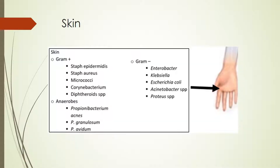Our first stop is the skin. What we're going to find most is gram-positive species, specifically Staph epidermidis, which is going to be the most common thing we isolate from the skin. Other gram-positives like Staph aureus, Micrococcus, Corynebacterium, and Diphtheroids can also be found here. Gram-negatives are mostly found in dark, damp places on the human body — between toes, in the armpits — where we can isolate things like Enterobacter, Klebsiella, E. coli, Acinetobacter, and Proteus species. Anaerobes are also found on the skin, most notably P. acnes. When thinking about empiric antibiotic coverage, we're most concerned about those gram-positive species, especially Staph and Strep.